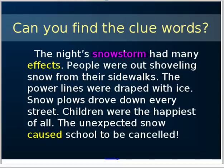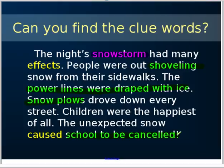Now let's look at the effects and highlight those in green. Here's one effect: they were out shoveling. Then another effect was the power lines — they were draped with ice. Another effect was that the snow plows had to come out. And the last effect was school was canceled. As you can see, there's one event, the snowstorm, that can cause multiple effects.